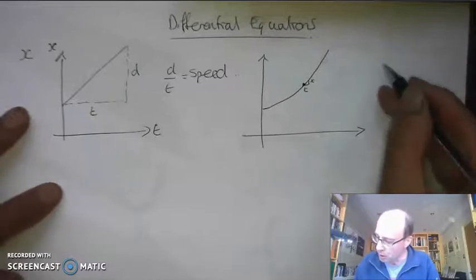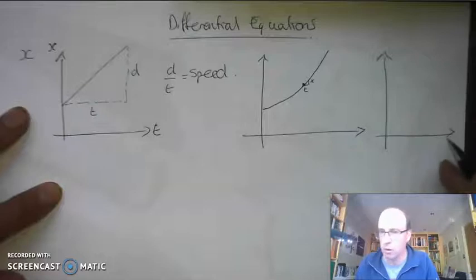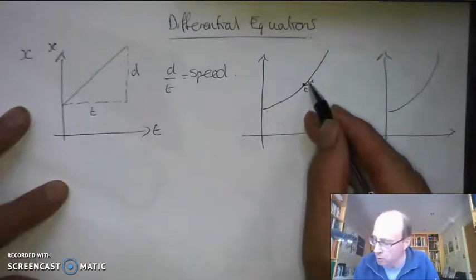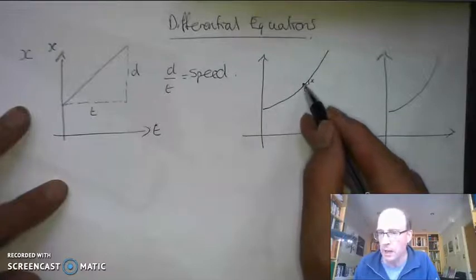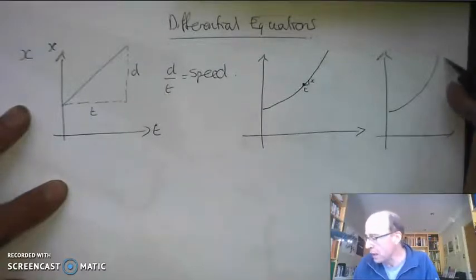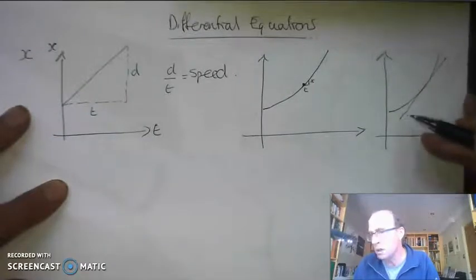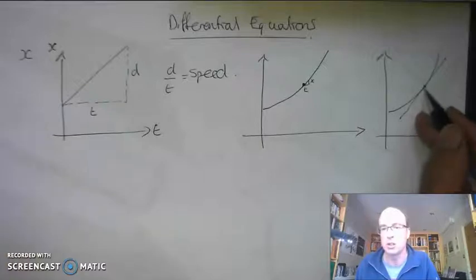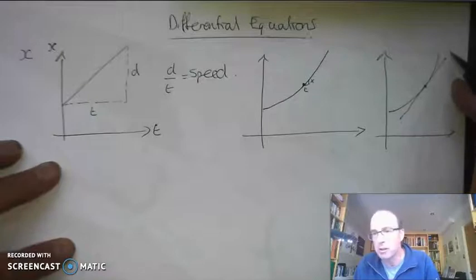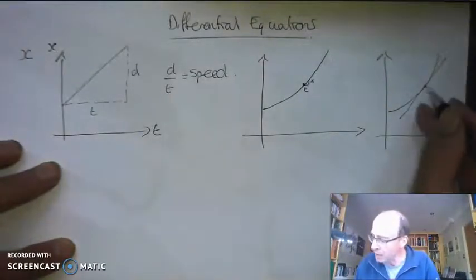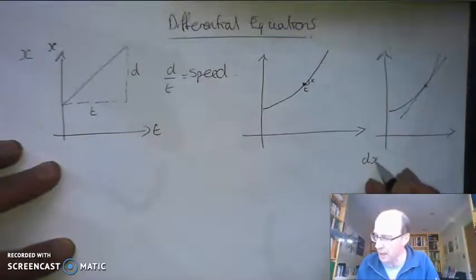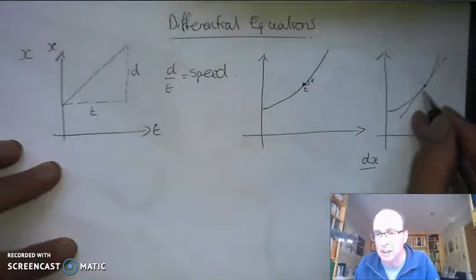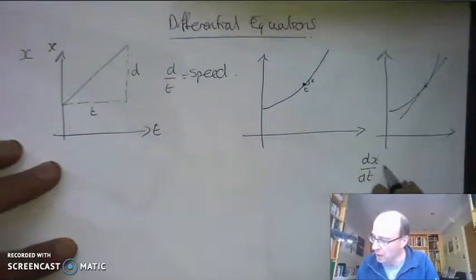What mathematicians do when they start talking about differential equations: they'll start off with the same curve, and they're going to make this triangle as small as possible. The smaller that gets, the more accurate my speed is going to be at that single point. As I make that triangle smaller and smaller, I end up with a tangent to that curve — a straight line that just touches the curve at a single point. I'm going to call that tiny little height dx, and I'm going to divide it by the tiny little amount of time dt.